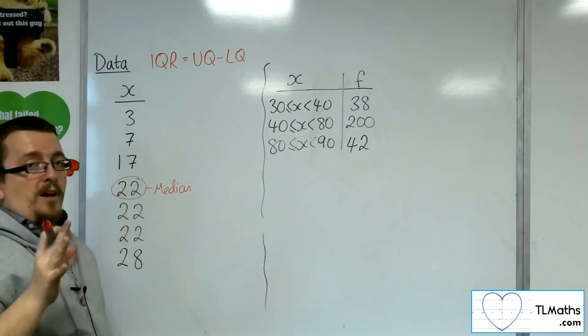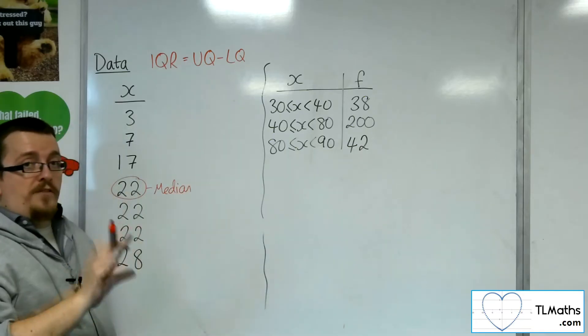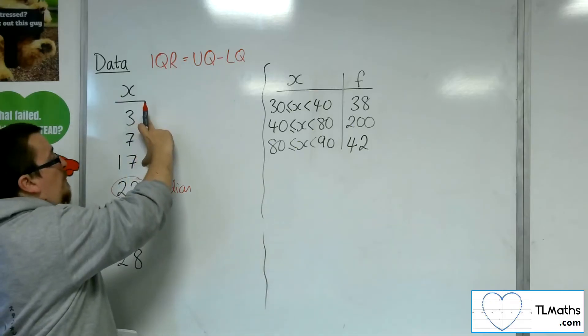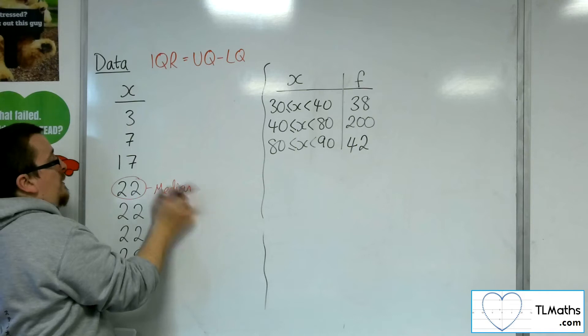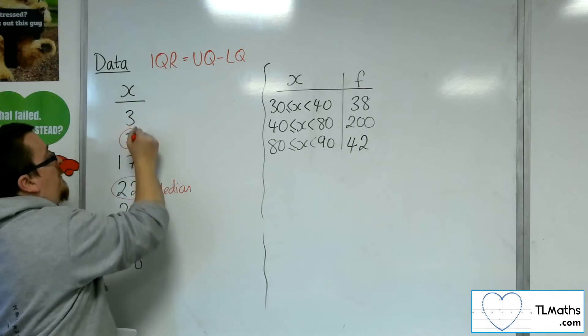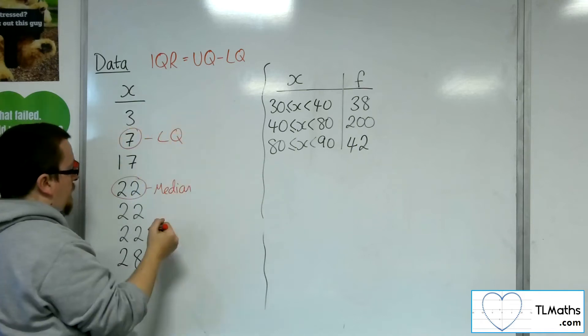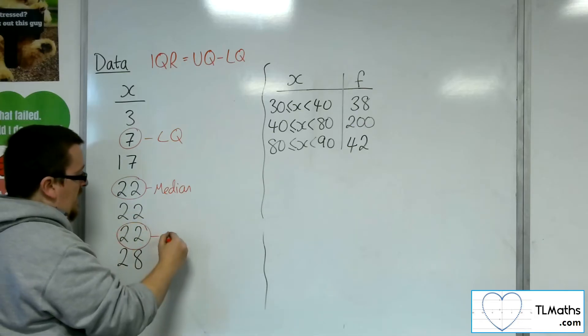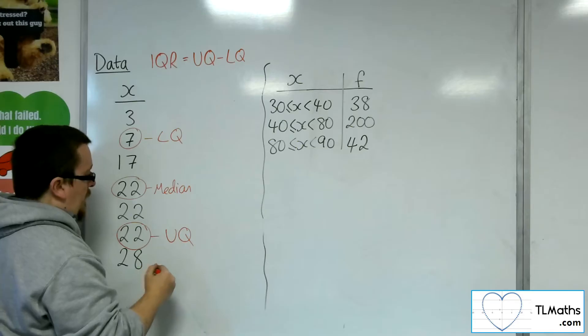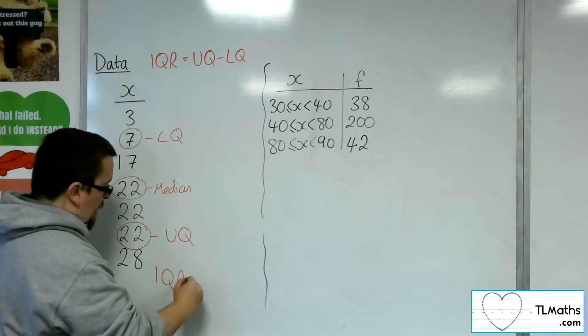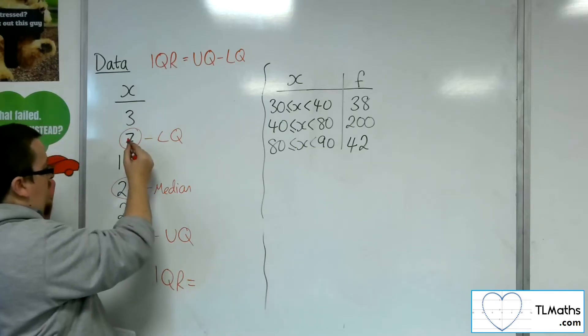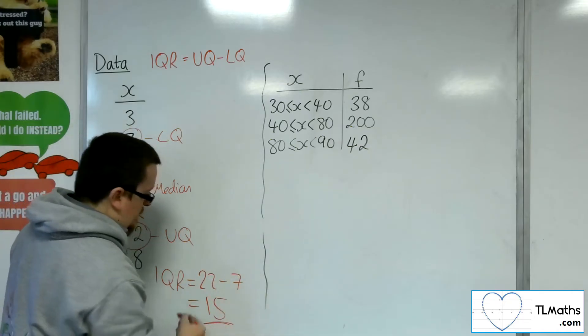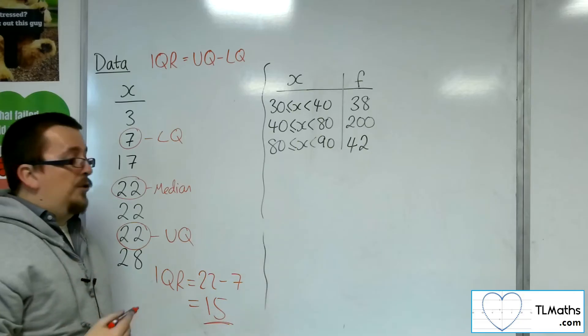Now I don't need the median as part of my calculation, but it's just to find the correct position. So the lower quartile is the median of the top half, ignoring the median that you've just found. And so 7 is the lower quartile. And the upper quartile is the median of the bottom half. So that's the 22. And so the interquartile range, for the first example, is 22 take away 7, which gets us 15. So that's the interquartile range.